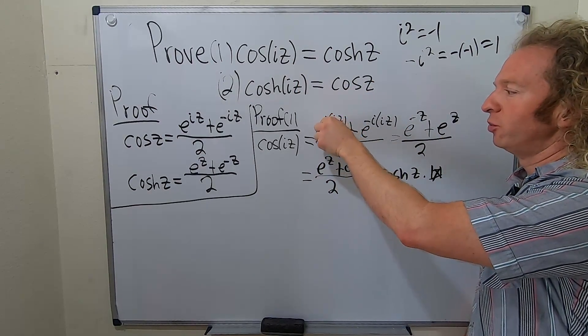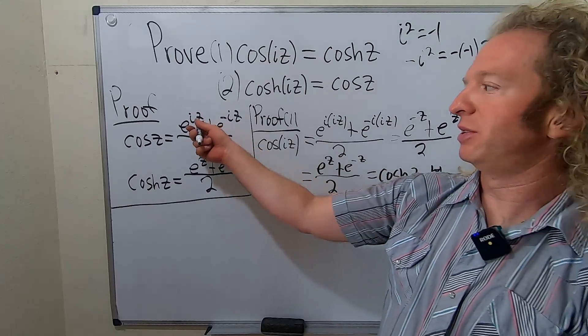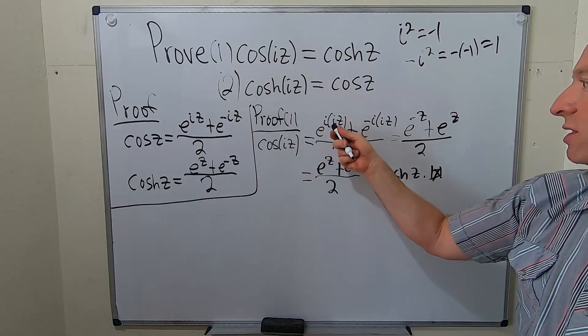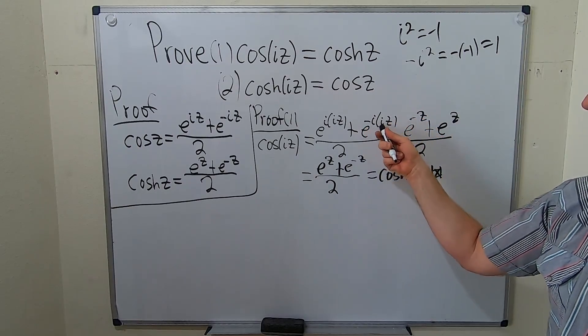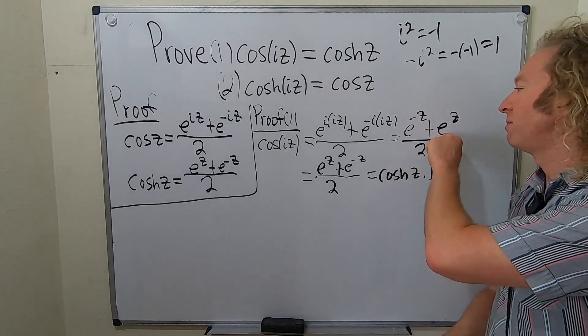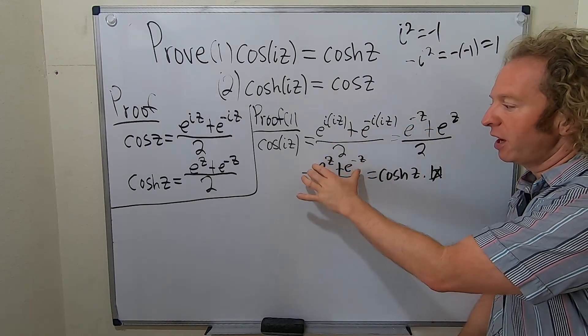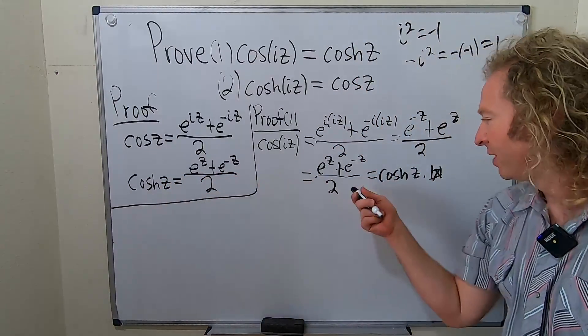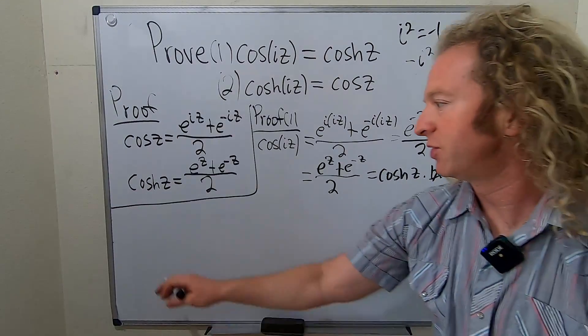So step 1, you replace z with iz. So we did that here. And then i times i is i squared, so that's negative 1. That's how we get that. And this is a positive 1. See up here, it's a positive 1. So we get that. All I did in this step is just switch these, okay? And then this is the definition. Well, I switched them to make it match this. And that's hyperbolic cosine.